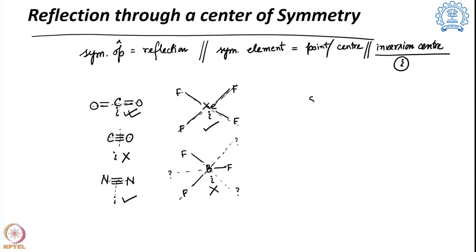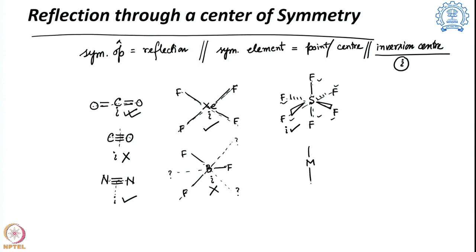For SF6, which is octahedral in geometry, the center of the molecule is sulfur. Reflecting each fluorine through that center maps it to another fluorine, so the center of symmetry is present. Similarly, for a metal complex in octahedral geometry with six identical ligands, all ligands reflect properly through the metal center, confirming the presence of a center of symmetry.